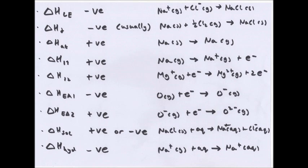Enthalpy change of formation is when you get a compound forming from its elements in their standard state. So here we have sodium chloride forming from sodium, which is naturally found as a solid, and chlorine, which is naturally found as a gas and is diatomic, so you use half Cl₂ to get just one Cl atom.